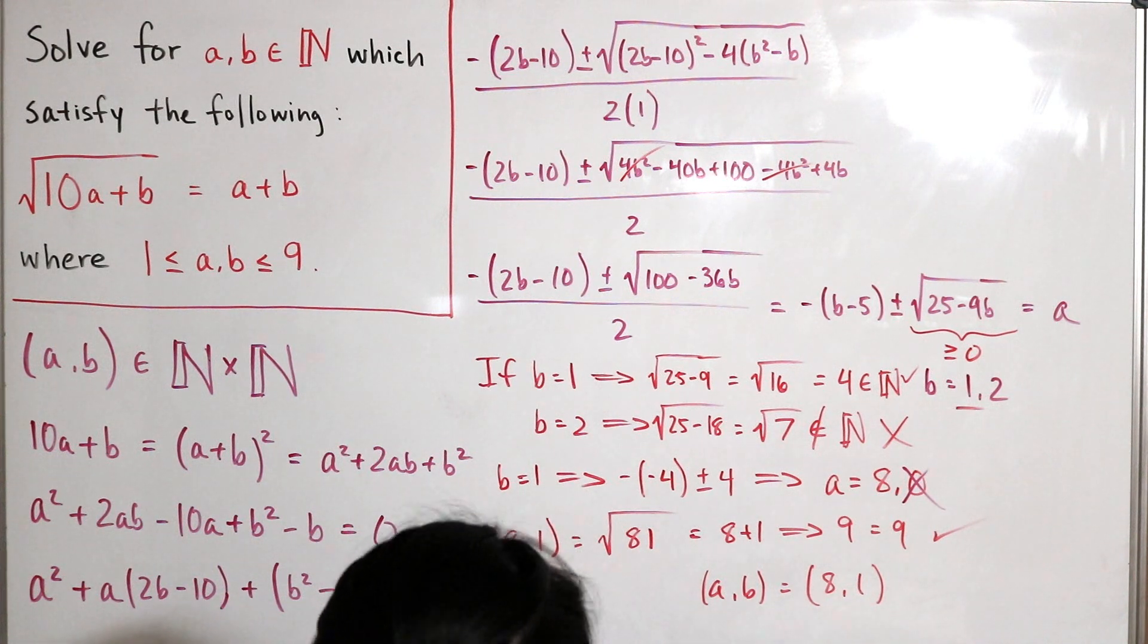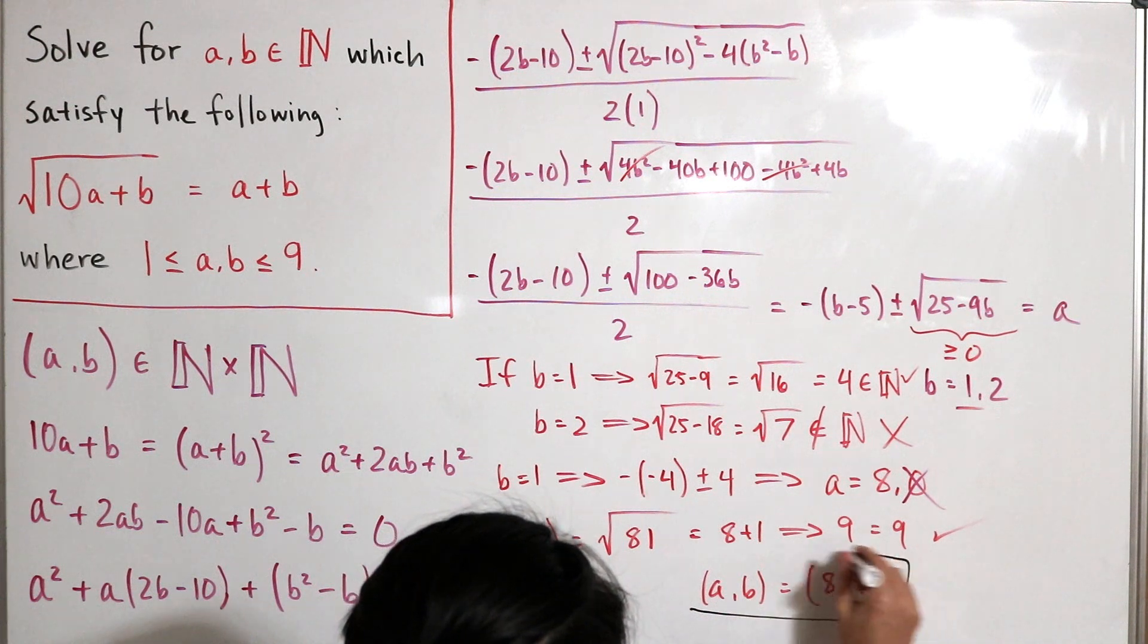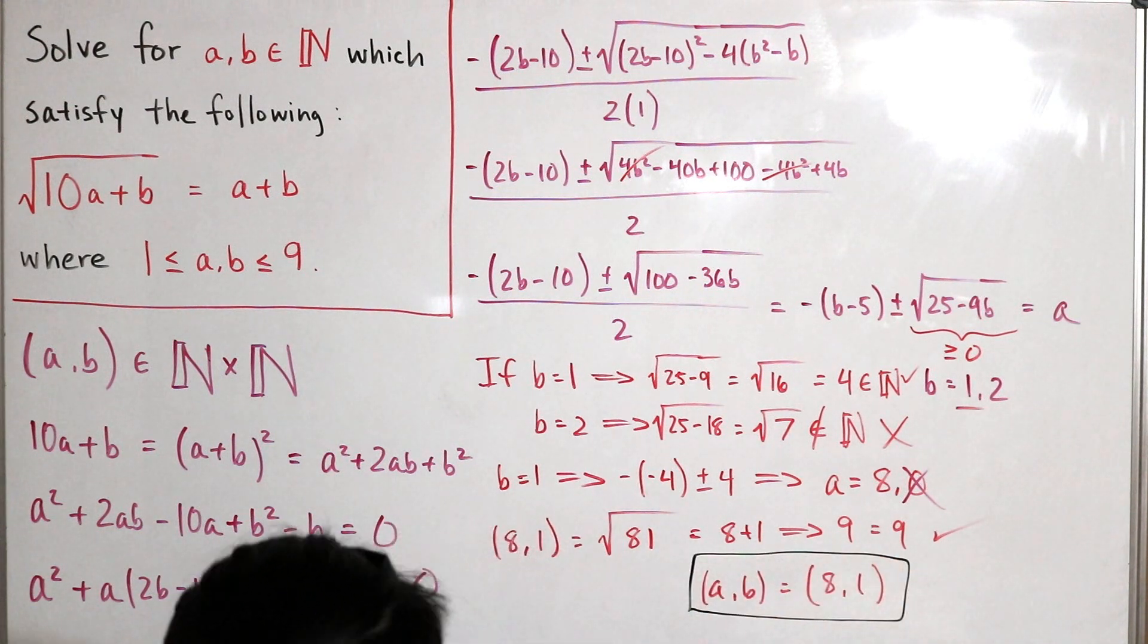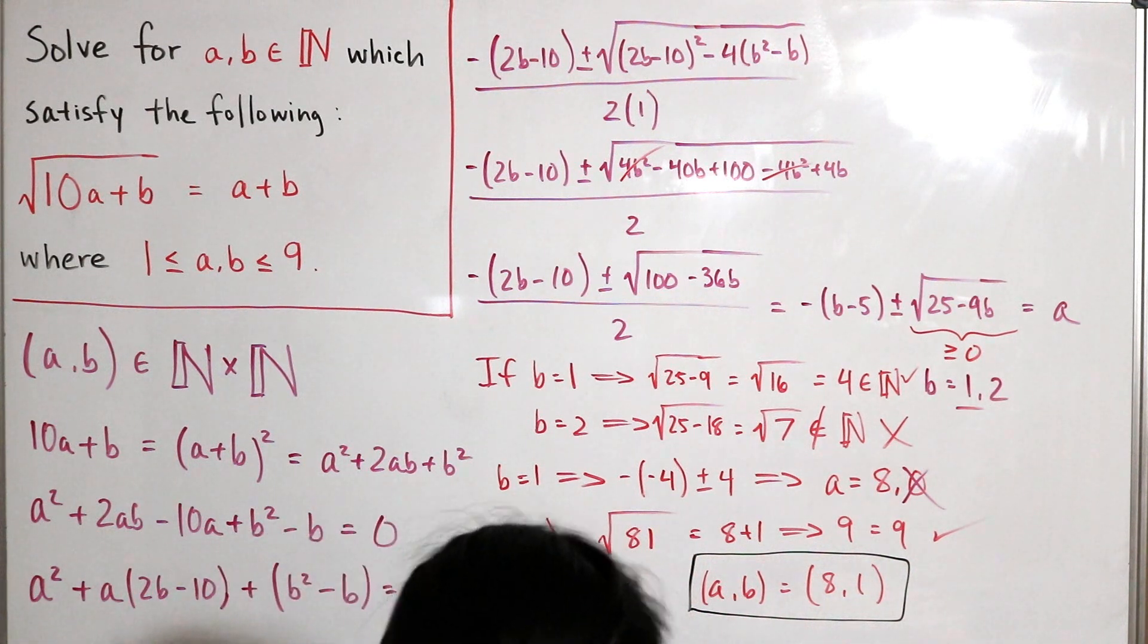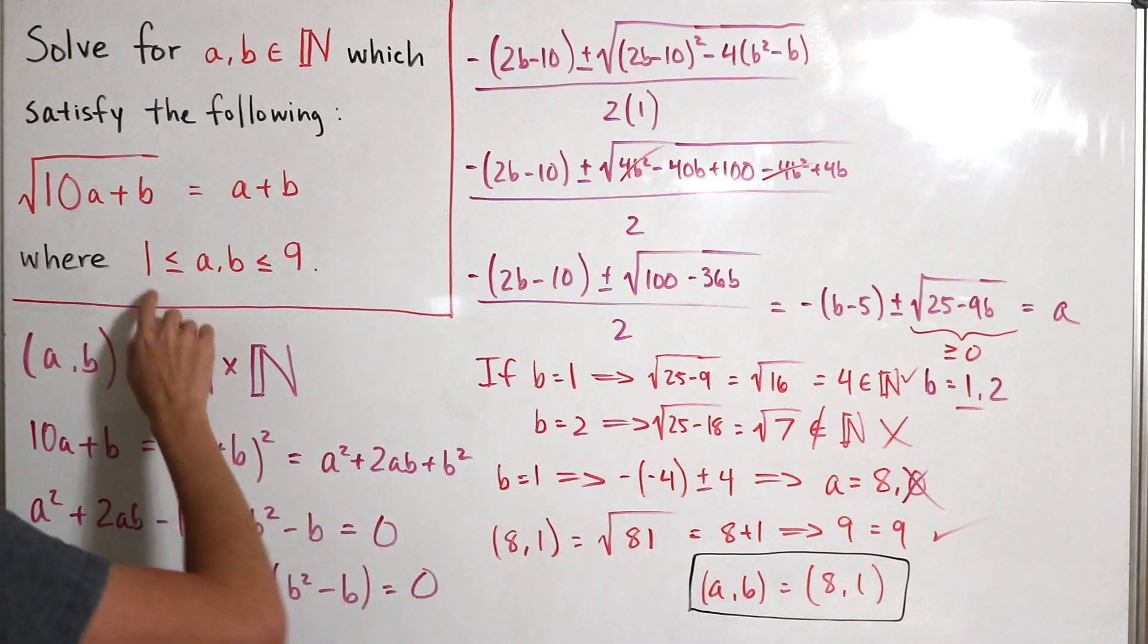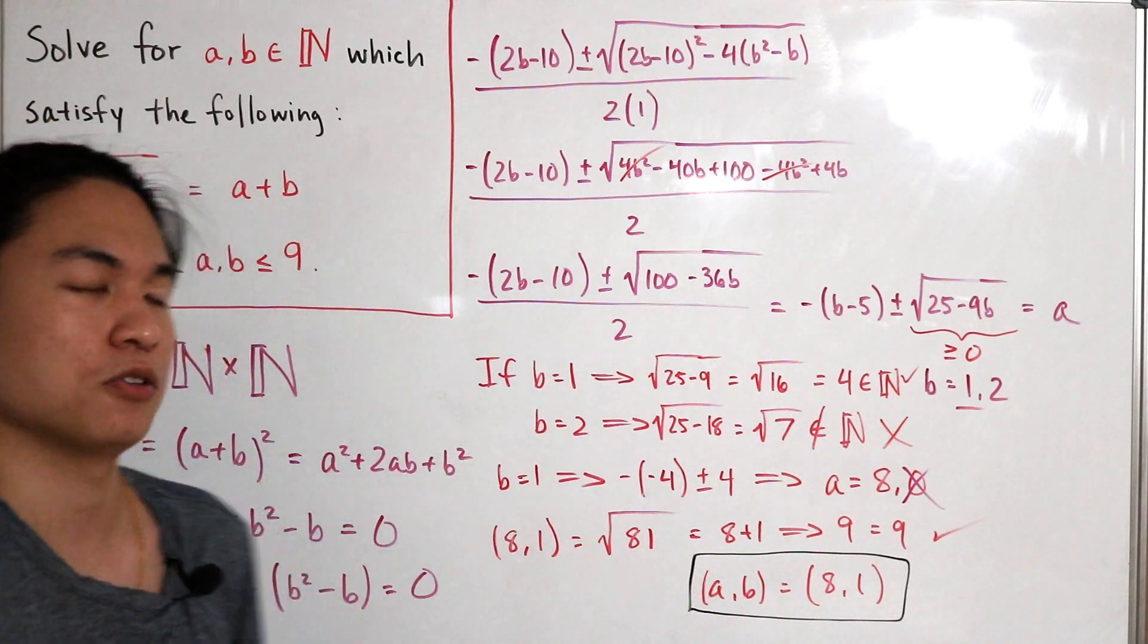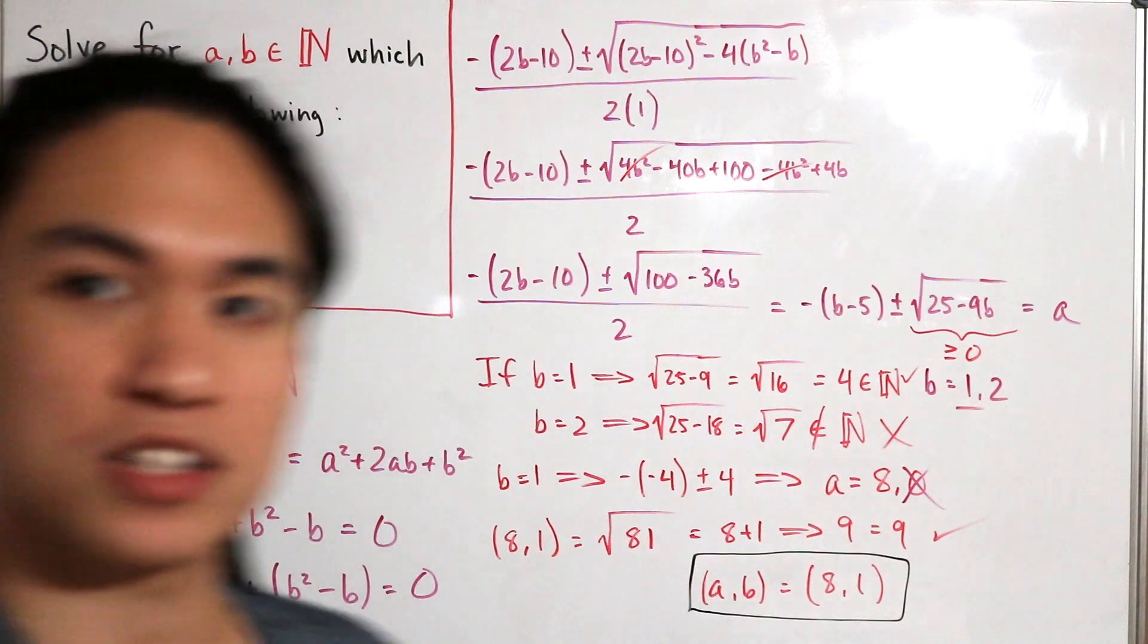And so there we have it. The only order pair that we find that satisfies the following equation with the Cartesian products of both coordinates being natural numbers. See if you can actually find real solutions that satisfy the equation, excluding this conditioned inequality, and see what you can come up with. So yeah, that's pretty cool if you ask me.